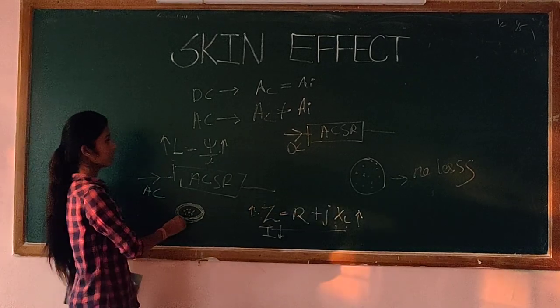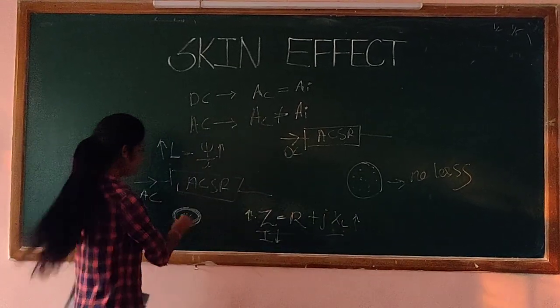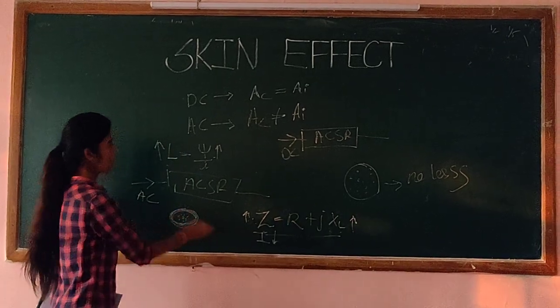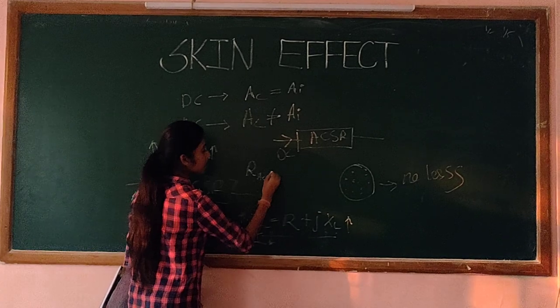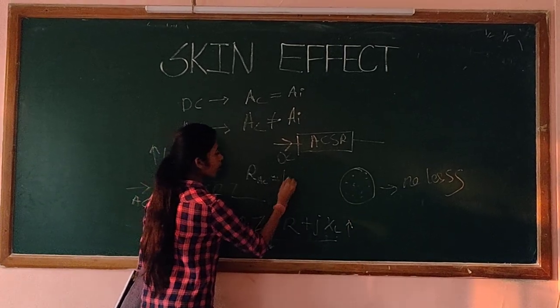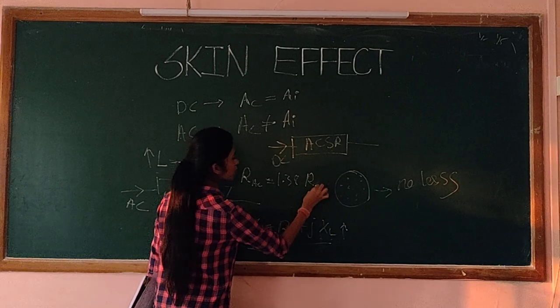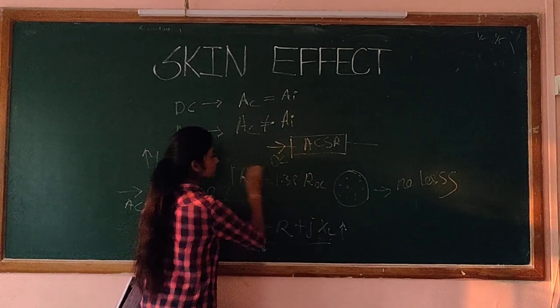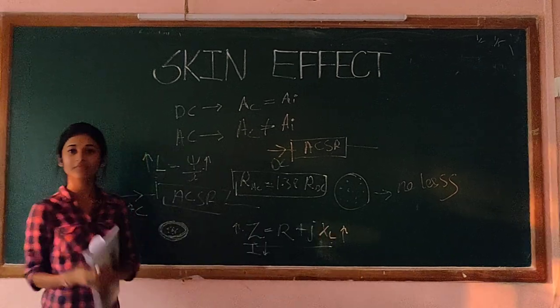So resistance in AC at the centre is much higher. So resistance of AC is 1.38 times the resistance of DC. Thanks so much.